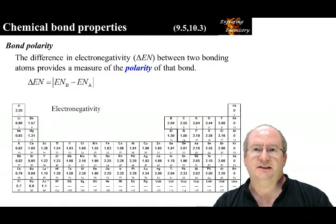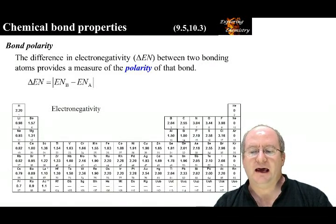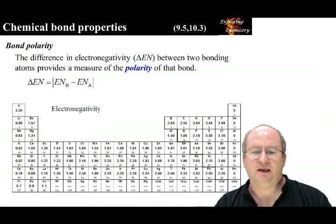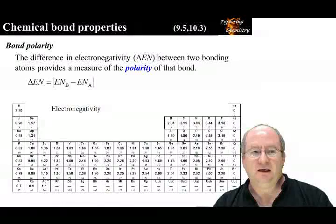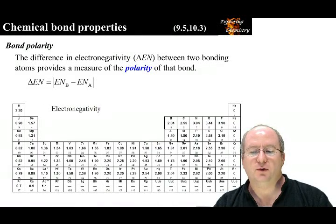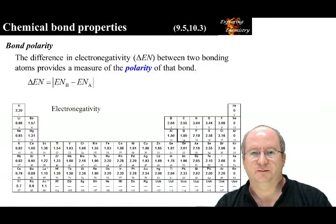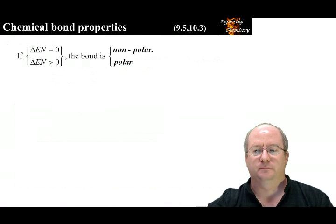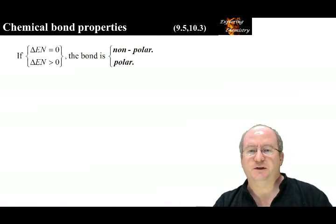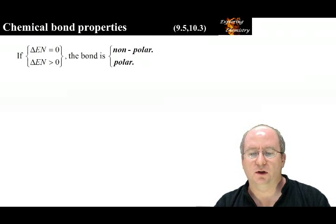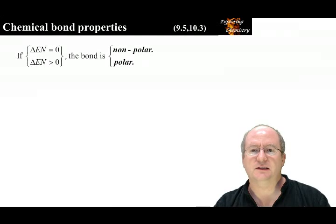The difference in electronegativity between two bonded atoms is a measure of the polarity of the bond. B and A are chosen so that the difference in electronegativity is positive. If the electronegativity difference is zero, the bond is nonpolar. If the electronegativity difference is greater than zero, the bond is polar.